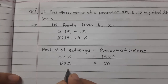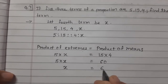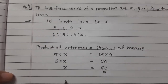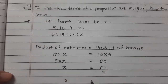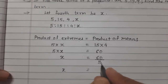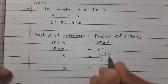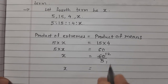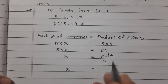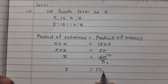Now 5 is multiplied here; if we transfer it to the other side it will become divided. So x = 60 divided by 5. Let's divide: 5 twos are 10, so x = 12.